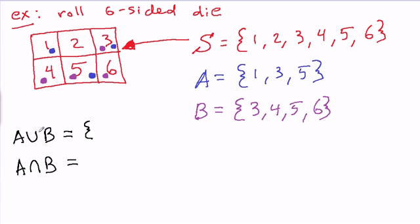So basically every outcome that has any color dot in it would qualify for A union B, right? It's all outcomes that are in either A or B. So 1, 3, 4, 5, 6. The only outcome that didn't qualify for A union B was 2.